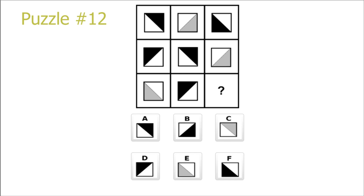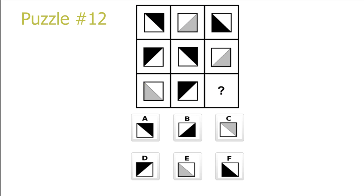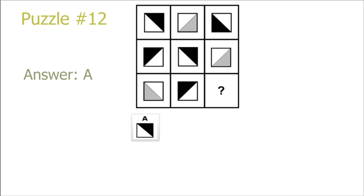Puzzle 12. Here we can base ourselves on the rows, diagonals, columns — whatever we want. But the easiest way is just to look from the top left to the bottom right diagonal and see that it's repeating on every row, and we get our answer A.